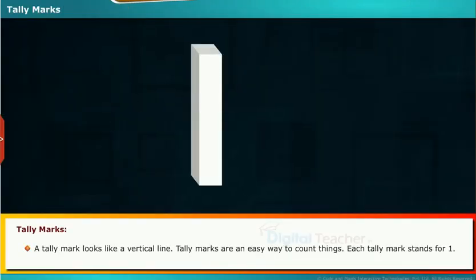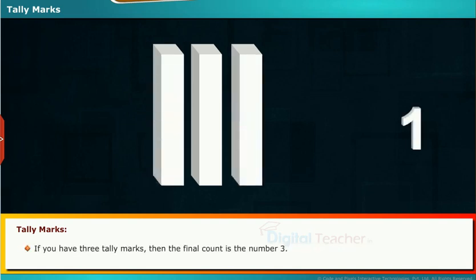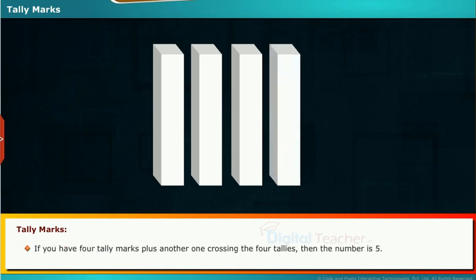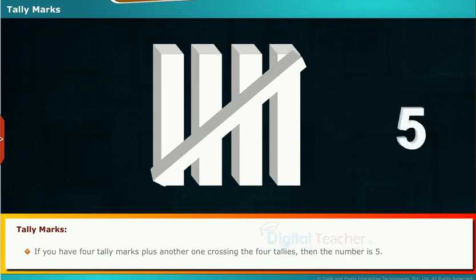Let us study the tally marks. A tally mark looks like a vertical line. Tally marks are an easy way to count things. Each tally mark stands for 1. If you have 3 tally marks, then the final count is the number 3. If you have 4 tally marks plus another 1 crossing the 4 tallies, then the number is 5.